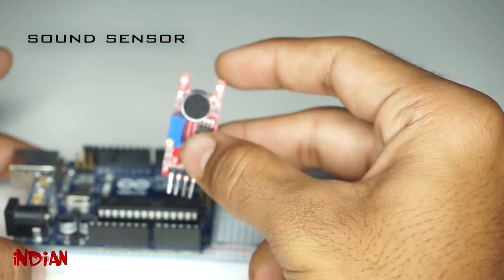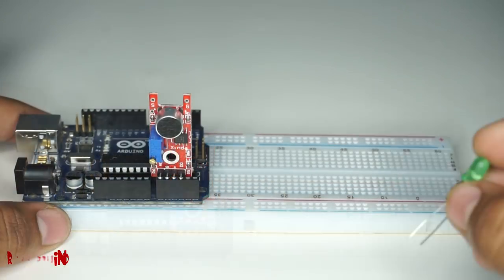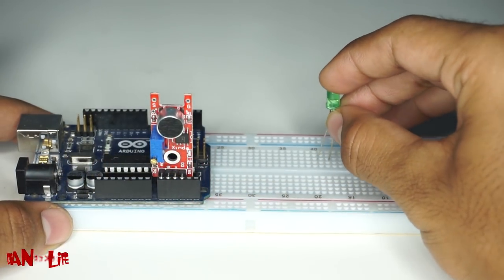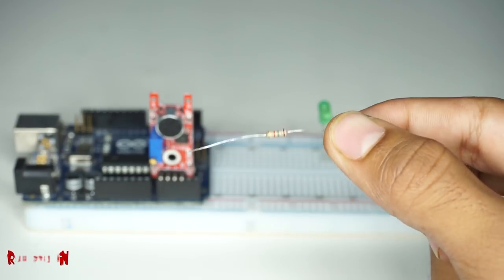We are using this sound sensor to sense the clap. First we will try it on a small LED and then we will go for a bigger light.